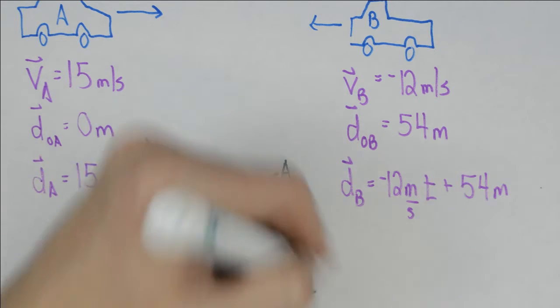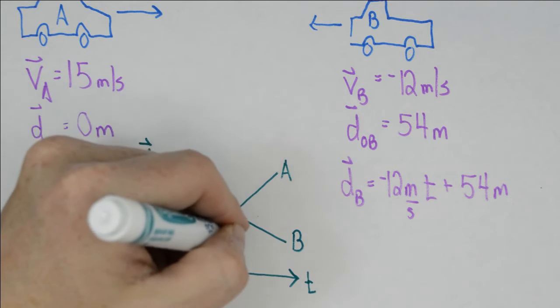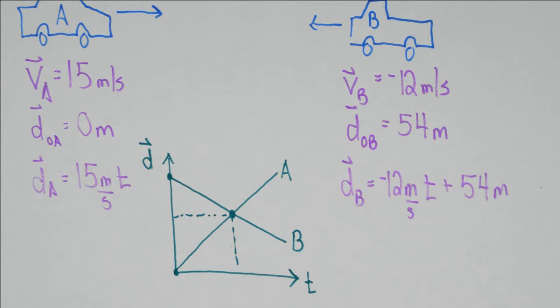B, on the other hand, is going to start at some positive position, and it's going to have a negative slope, and where they intersect gives us the time and the position where they meet.